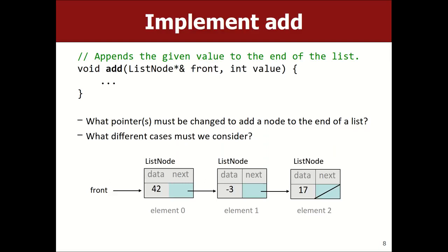Adding to the end of a vector is easy — you just put it at the last index, and that's the fast case. With a linked list it's the opposite: the front is the good case because you're right there and just add the thing, but with the end you actually have to hop all the way there by saying next, next, next in a loop.